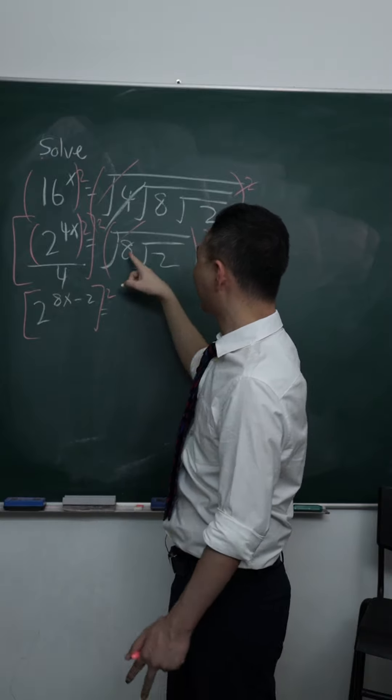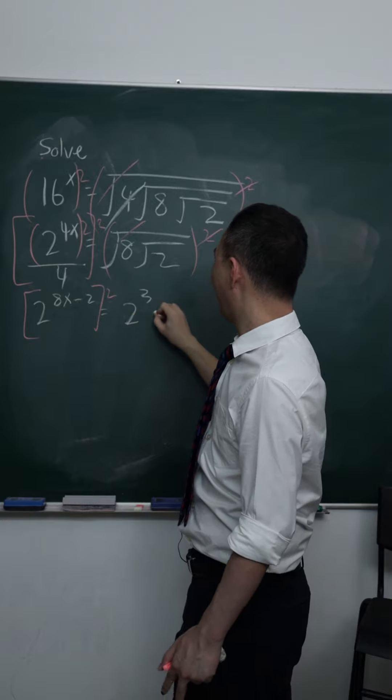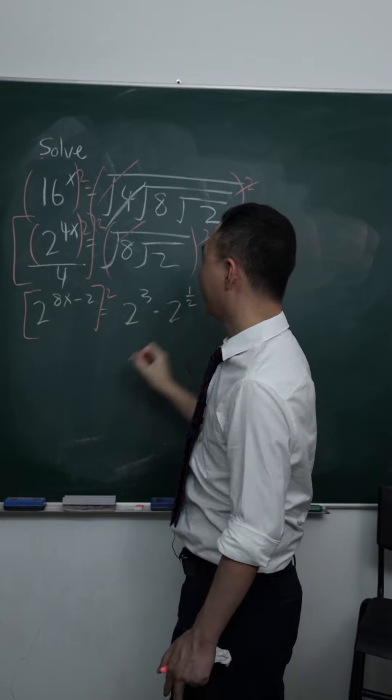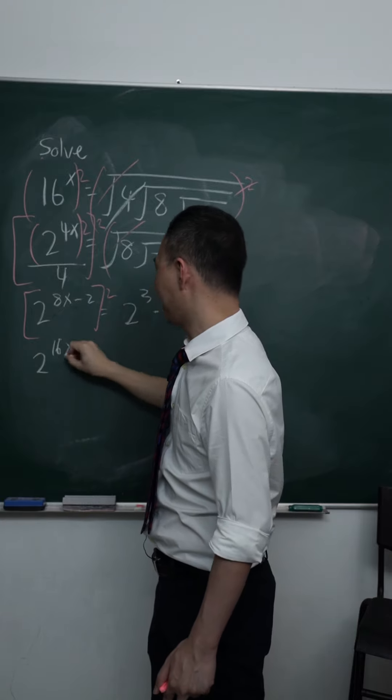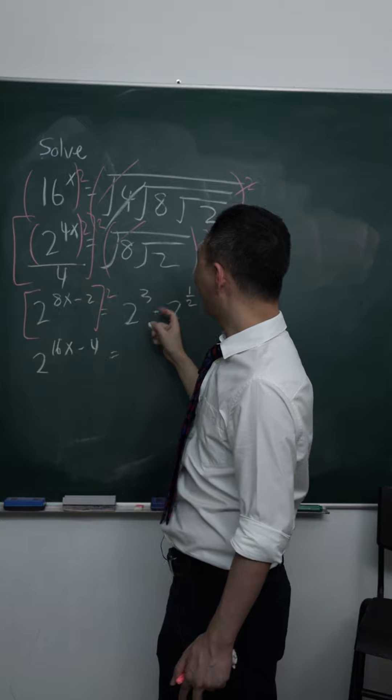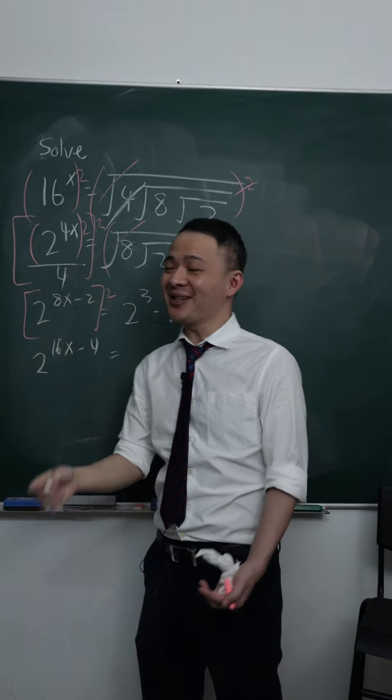2 power of 3 is 8. 2 power of 3, multiply square root 2, which is 2 power of 1 over 2. Then, this 2, I can multiply in, becomes 16x minus 4. So this one is multiplying in, plus the power.